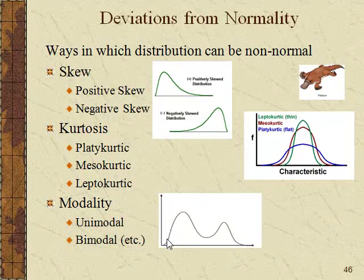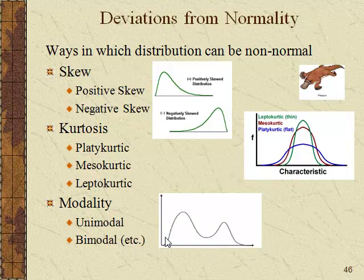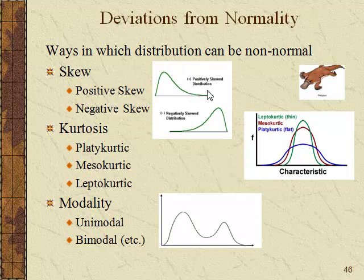The last topic is deviations from normality. There are three primary ways the normal curve can deviate. The first is skew, where the data are no longer symmetrical and the curve leans one way or the other. If it's positively skewed, there are extreme scores on the positive end; if negatively skewed, extreme scores on the negative end. Remember: it's not where most scores are that defines the skew — it's where the extreme scores are; the tail tells the tale.